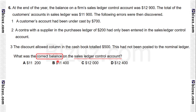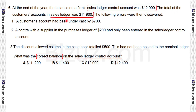Let's see the case study. At the end of the year, the balance of the firm's sales ledger control account was 12,900. The total of the customers' accounts in the sales ledger was 11,900. So there is a difference between the sales control account and the sales ledger. After finding this difference, the following errors were then discovered.